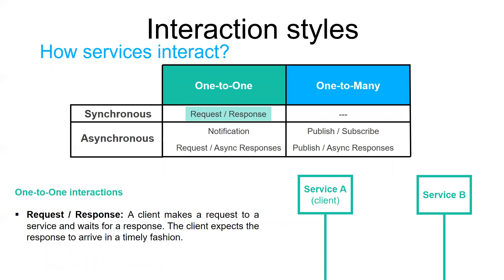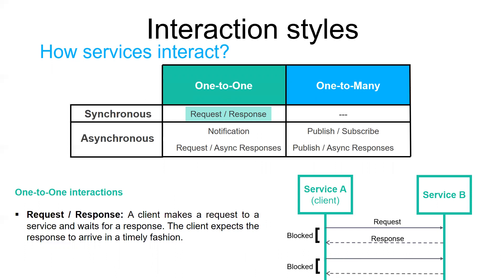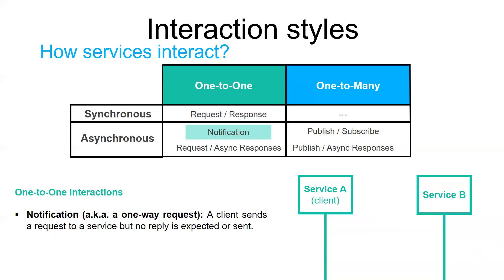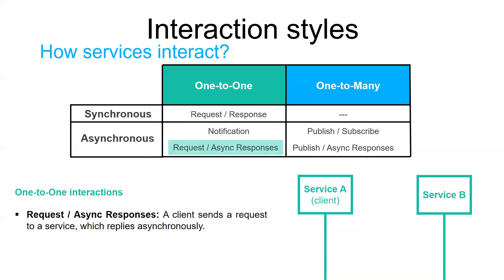For one-to-one interactions: the synchronous style is the well-known request/response, where the client makes a request to a service and waits for a response. The client expects the response in a timely fashion, and in a thread-based application the thread might even block while waiting. For asynchronous one-to-one communication, the first option is the notification (also called one-way request), where the client sends a request but no reply is expected. The second asynchronous option is request/async-responses, where the client sends a request and the service replies asynchronously — the client does not block and is designed with the assumption that the response may not arrive for a while.